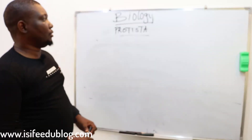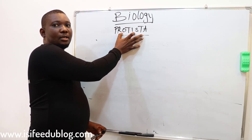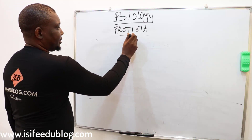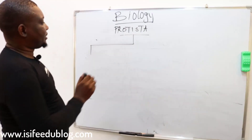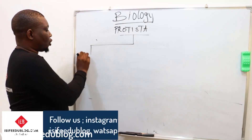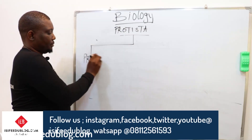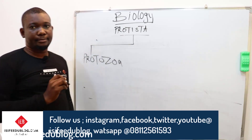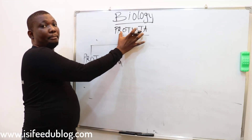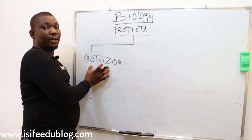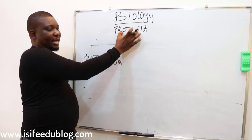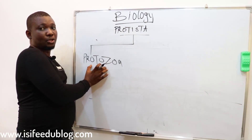Now I'm going to break this kingdom into four groups called phyla. The first group of this kingdom is Protozoa — that is phylum Protozoa. Remember, this is a kingdom and this is the phylum. There are four groups under this kingdom Protista; I've just mentioned one — Protozoa.